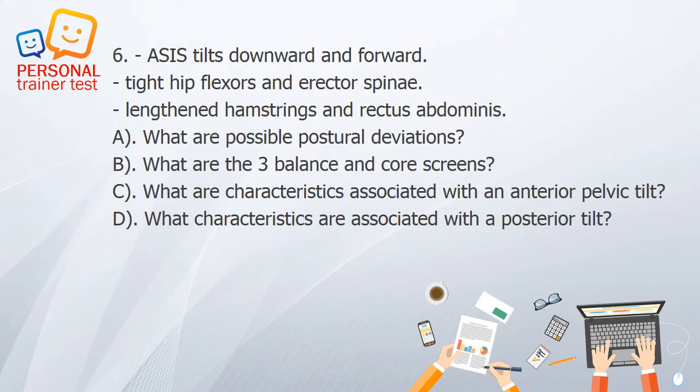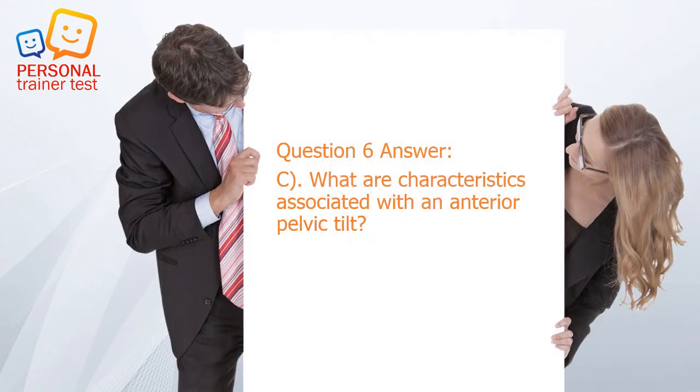Question 6. A. What are possible postural deviations? B. What are the three balance and core screens? C. What are characteristics associated with an anterior pelvic tilt? D. What characteristics are associated with a posterior tilt? Answer: C. Anterior pelvic tilt: ASIS tilts downward and forward, tight hip flexors and erector spinae, lengthened hamstrings and rectus abdominis.